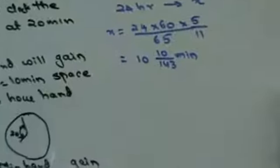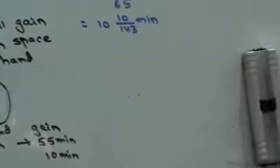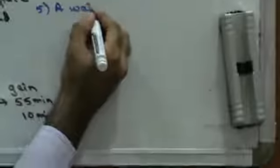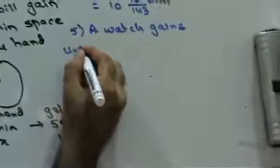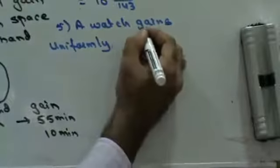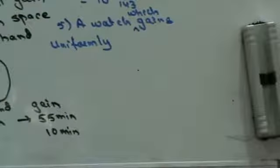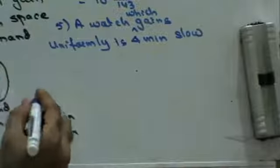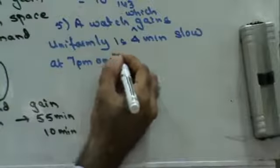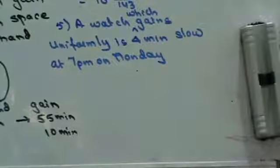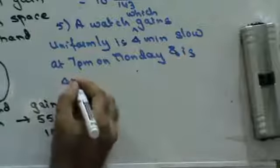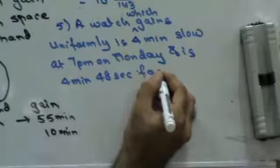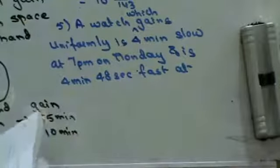So the clock will go fast by 10 10/143 minutes every day. Next problem: our watch which gains uniformly is 4 minutes slow at 7pm on Monday, and is 4 minutes 48 seconds fast at 7pm on the following Monday. When was the watch correct?